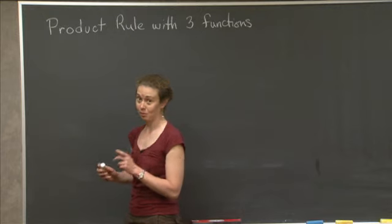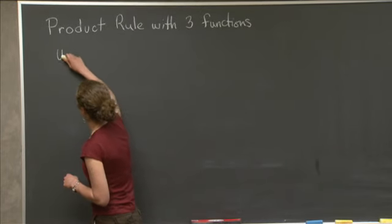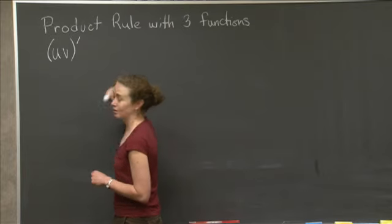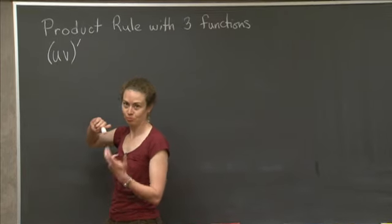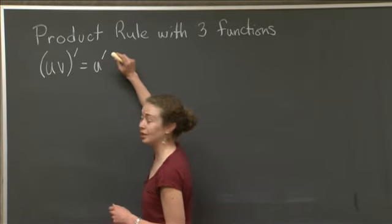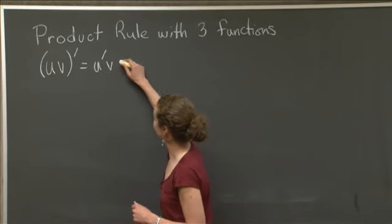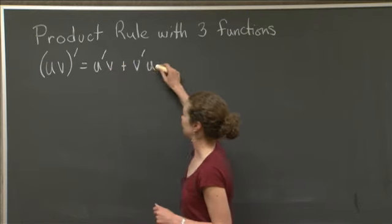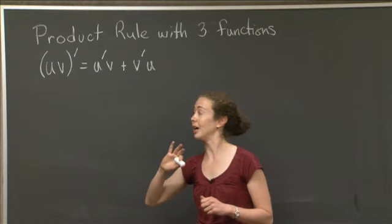So for two functions, let me remind you. If you have uv, the product, and you take its derivative, so prime will denote d/dx, then we can take the derivative of the first times the second function left alone plus the derivative of the second function times the first left alone. So this should be familiar from class.